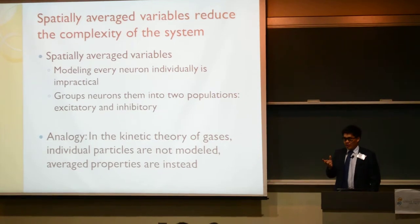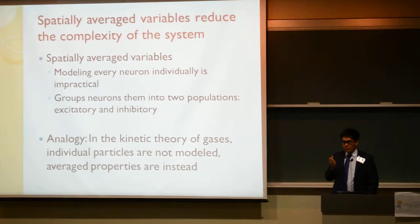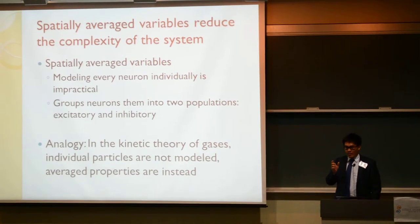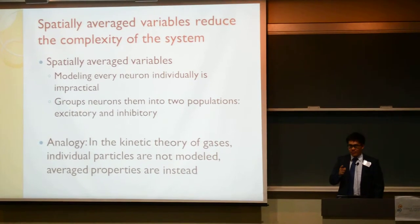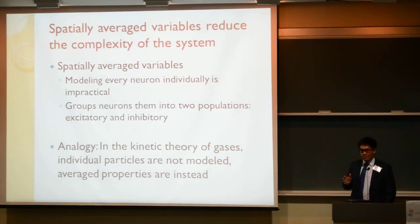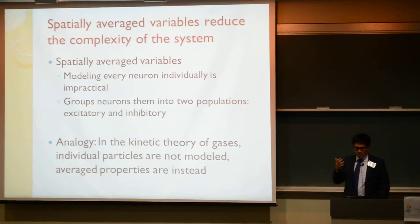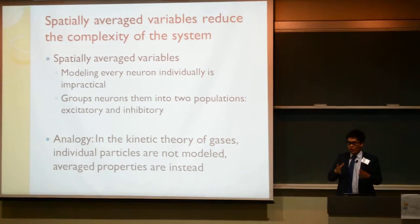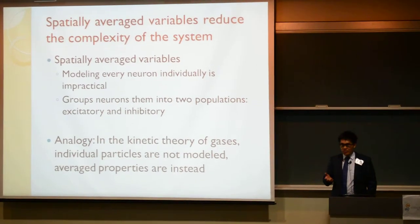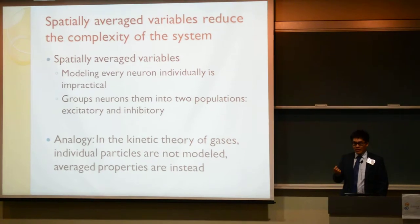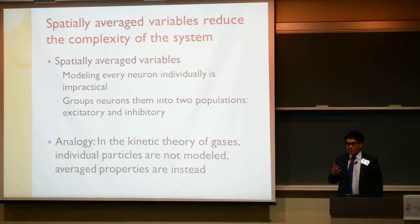Each neuron, back in the 1950s, was modeled by the Hodgkin-Huxley equations, which was very successful — it won a Nobel Prize — at describing the electrical dynamics of a single neuron. But the problem is the brain has billions of neurons, and it would be impractical to use those equations on every single neuron. So instead, past researchers introduced the notion of spatially averaged variables, where we group neurons into large populations, and based on their characteristics, they are governed by different equations, but in the end, only eight variables come out. The analogy is, in the kinetic theory of gases, we never discuss every individual particle — we talk about the average of the entire body of gas instead. Random inputs are numerically approximated by the normal distribution for simulations.